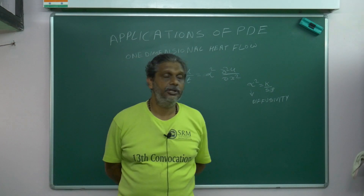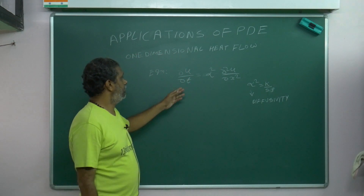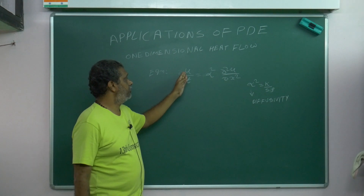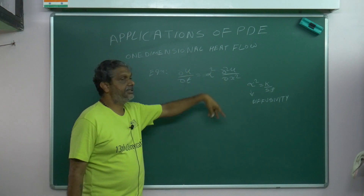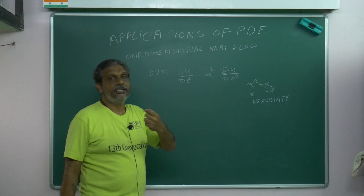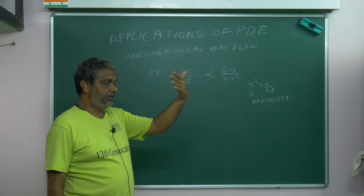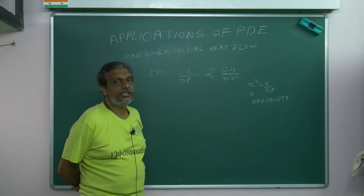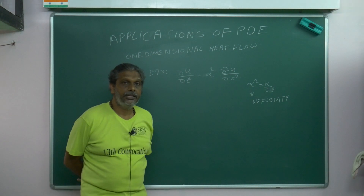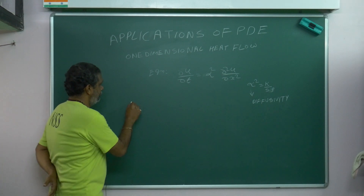Here also, if you apply the variable separable method — writing u = X(x)·T(t) — then separating variables and comparing, after working through it, you will reach the possible solutions.